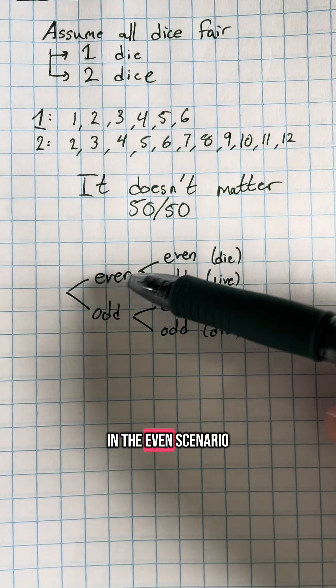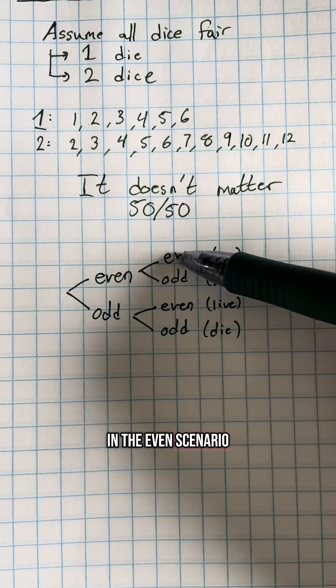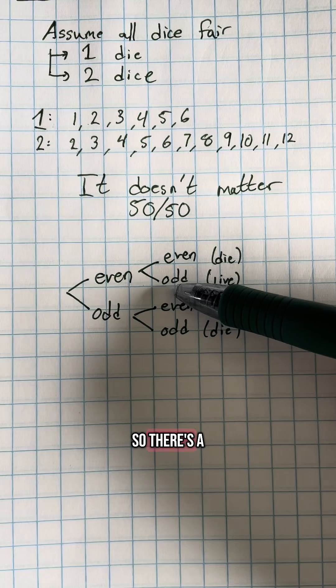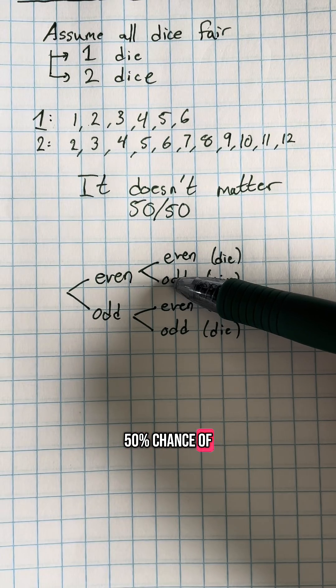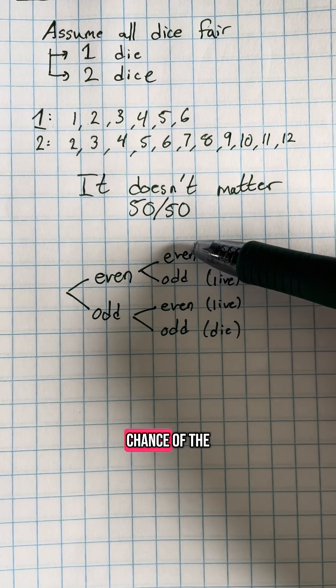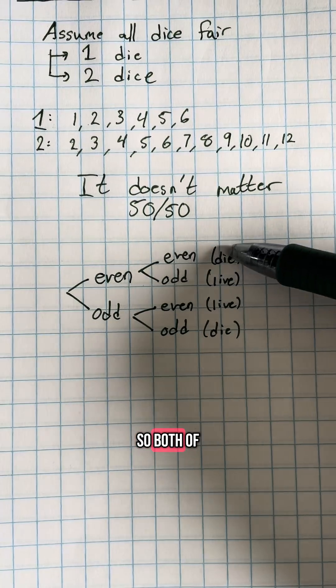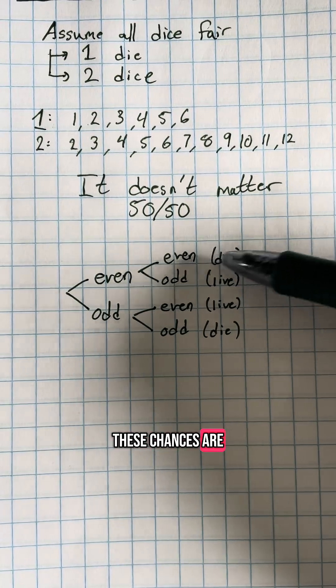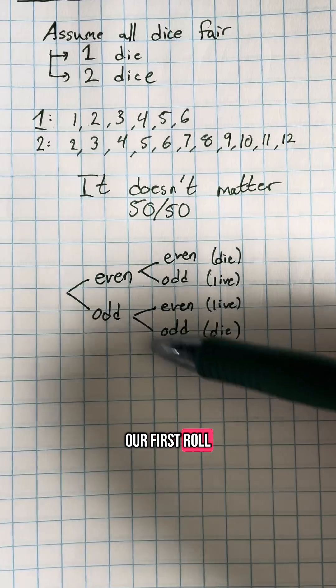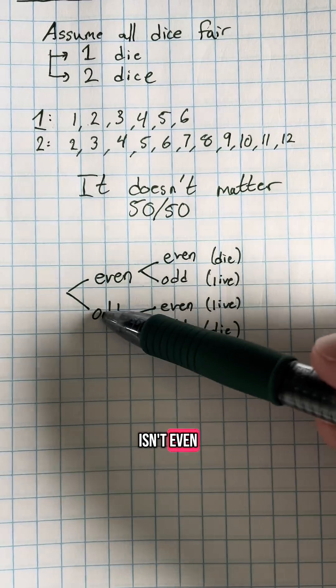If we're in the even scenario, we want to roll an odd number, so there is a 50% chance of that happening — or a 50% chance of the death scenario. So both of these chances are equally likely if our first roll is even.